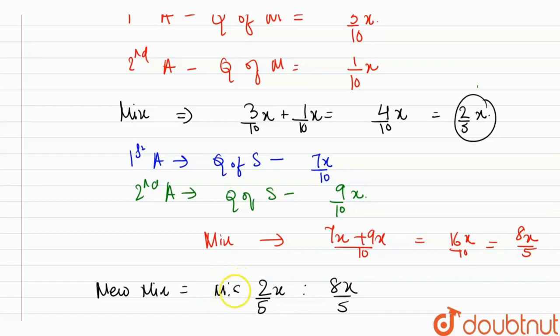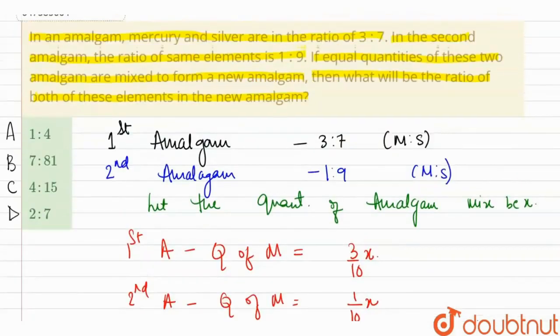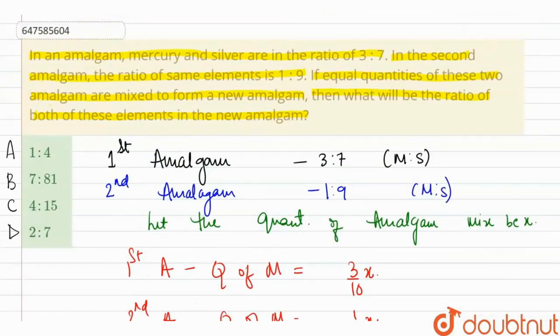Now in the new mixture, the mercury and silver ratio will be 2/5x to 8x/5. This will be the ratio of mercury to silver. When we solve this, we get ratio 1:4. So the new mixture will have mercury and silver ratio of 1:4.